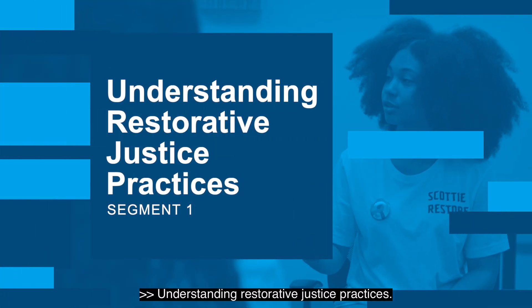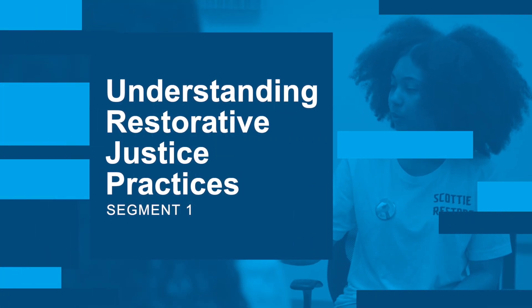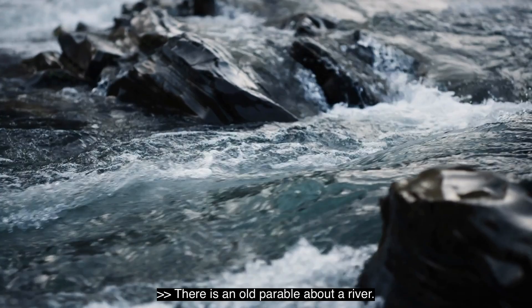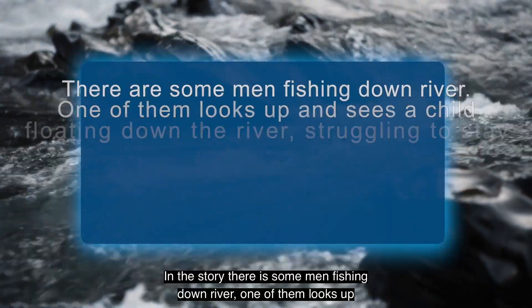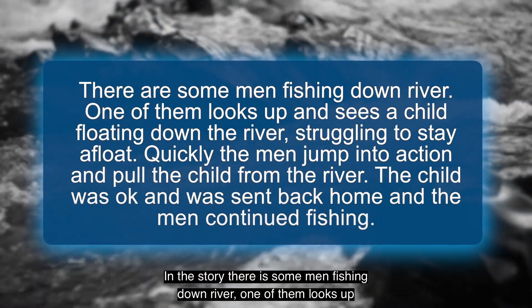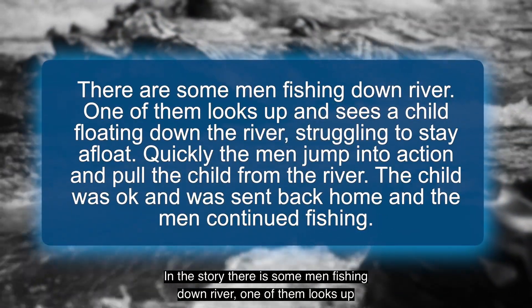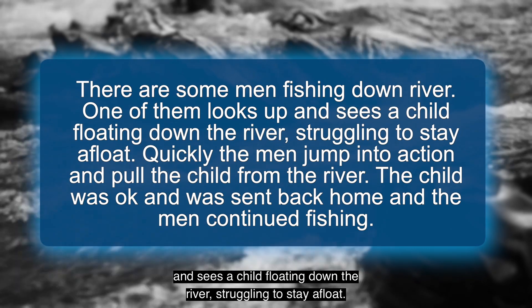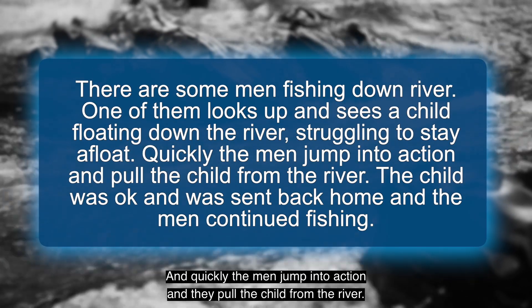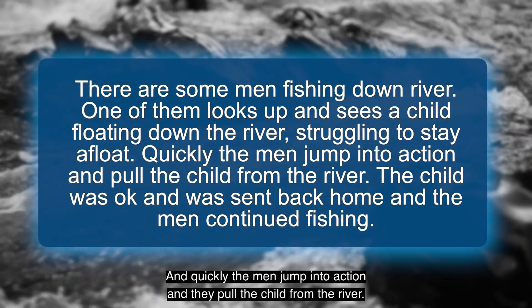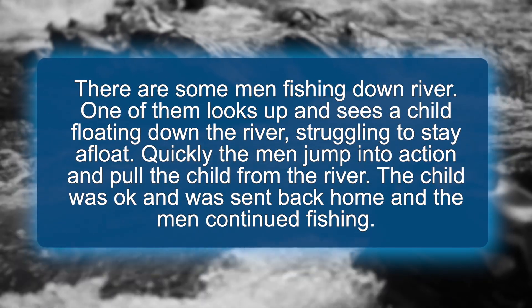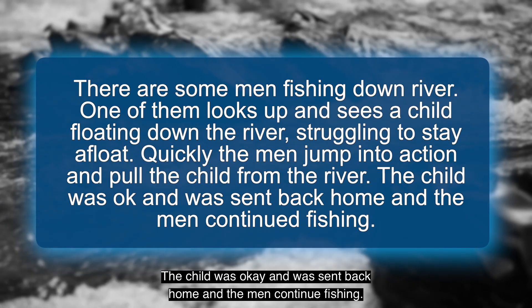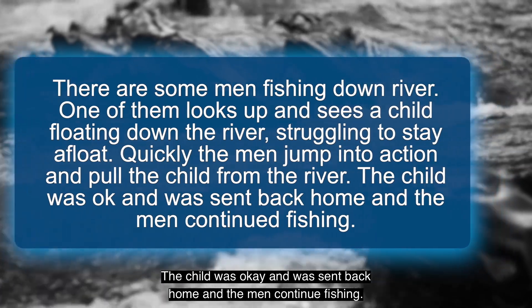Understanding restorative justice practices — segment one. There's an old parable about a river. In the story, some men are fishing downstream. One of them looks up and sees a child floating down the river struggling to stay afloat, so the men quickly jump into action and pull the child from the river. The child was okay, was sent back home, and the men continued fishing.